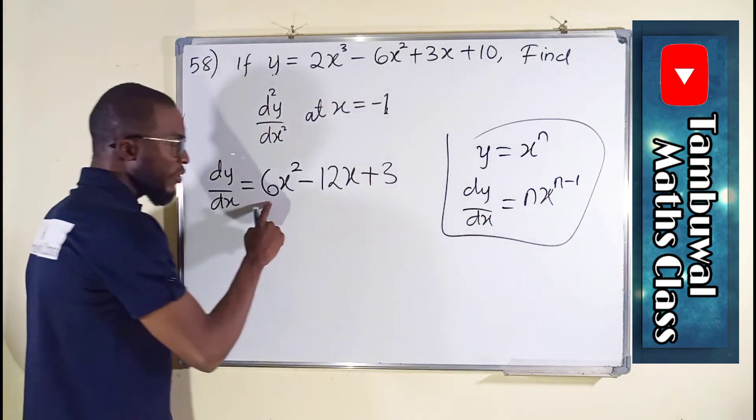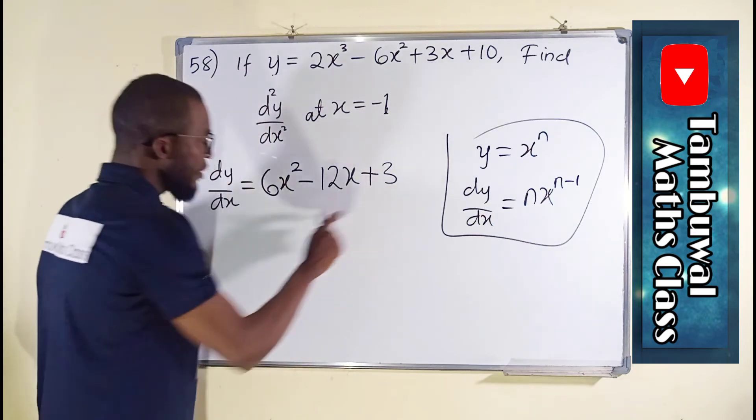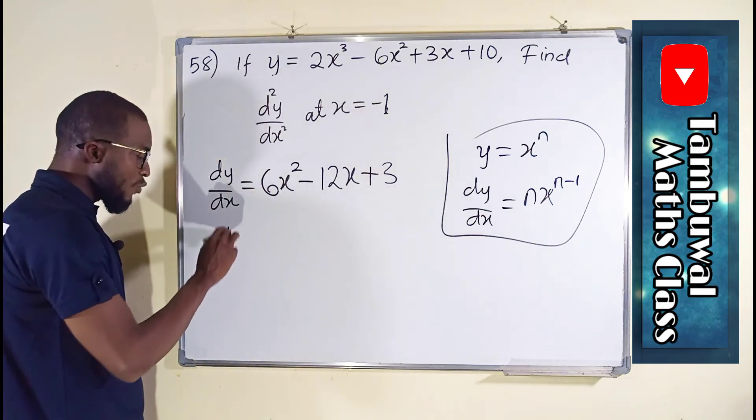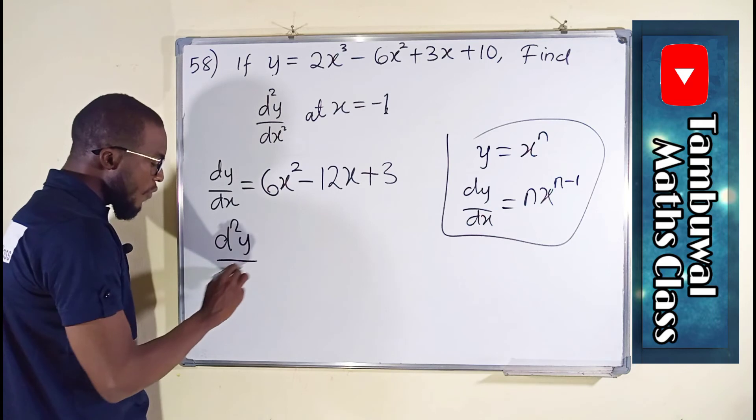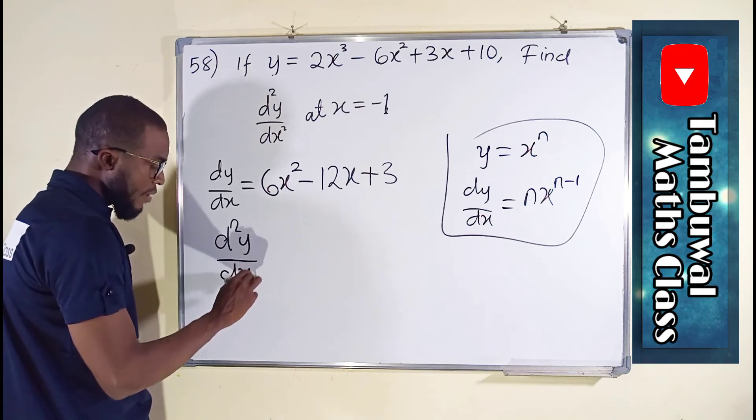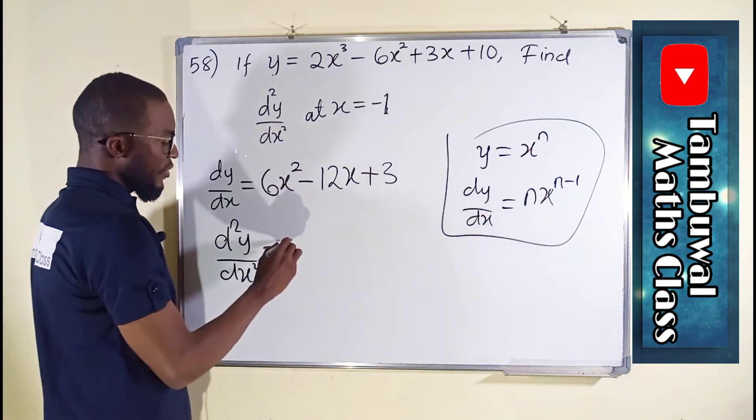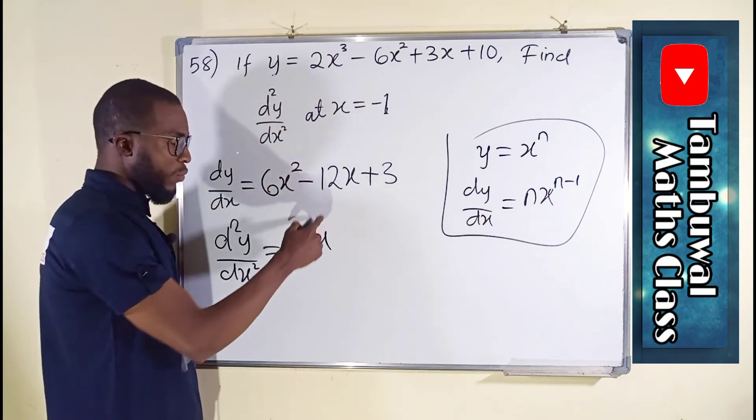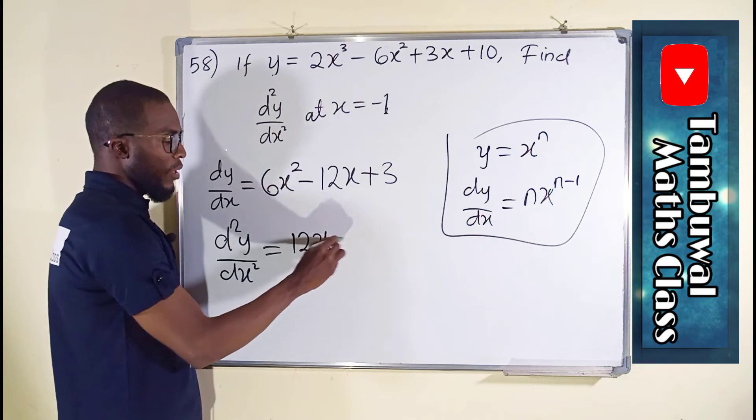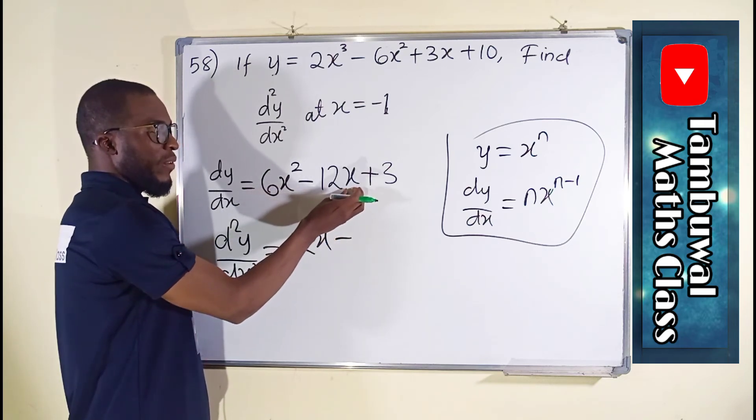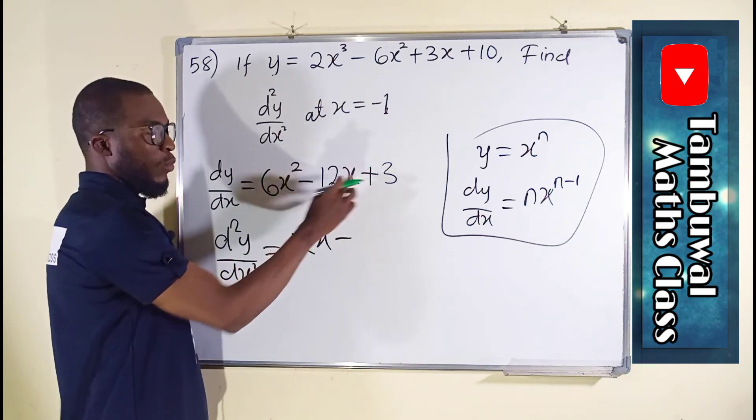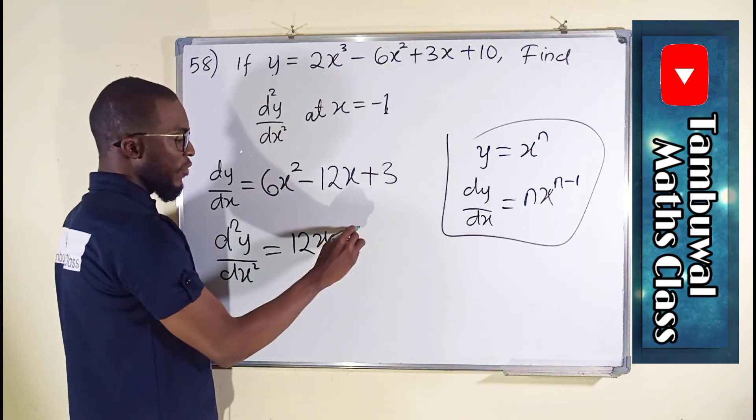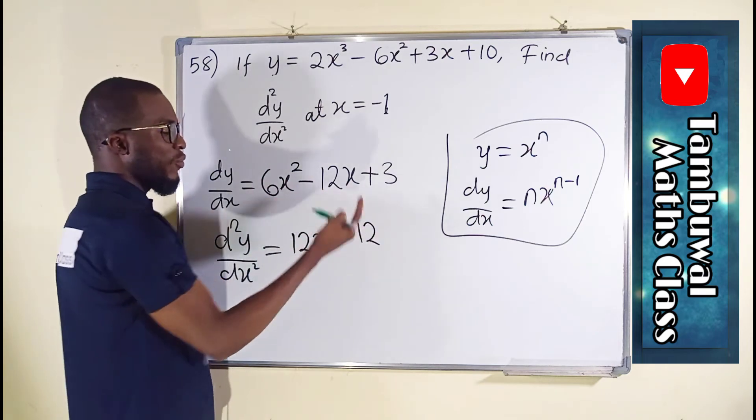Now we are going to take the second derivative of this. This is the first derivative, the second derivative is going to be d squared y over dx squared. 2 times 6 is 12x, then 2 minus 1 is 1, so we don't have to write the 1 here. Any variable without a power written is to the power 1, and 1 will change to constant, so we have only 12 here because 12 times 1 is 12. And the derivative of constant is 0, so we don't have to write it.